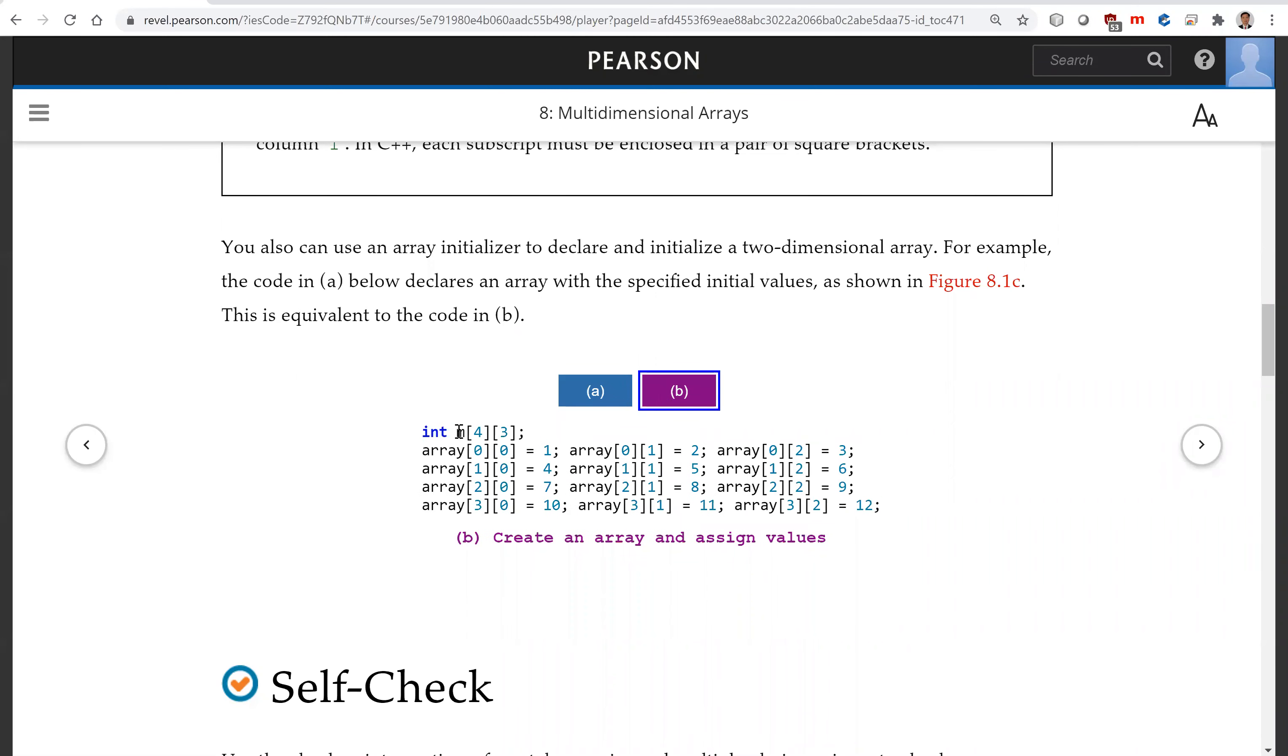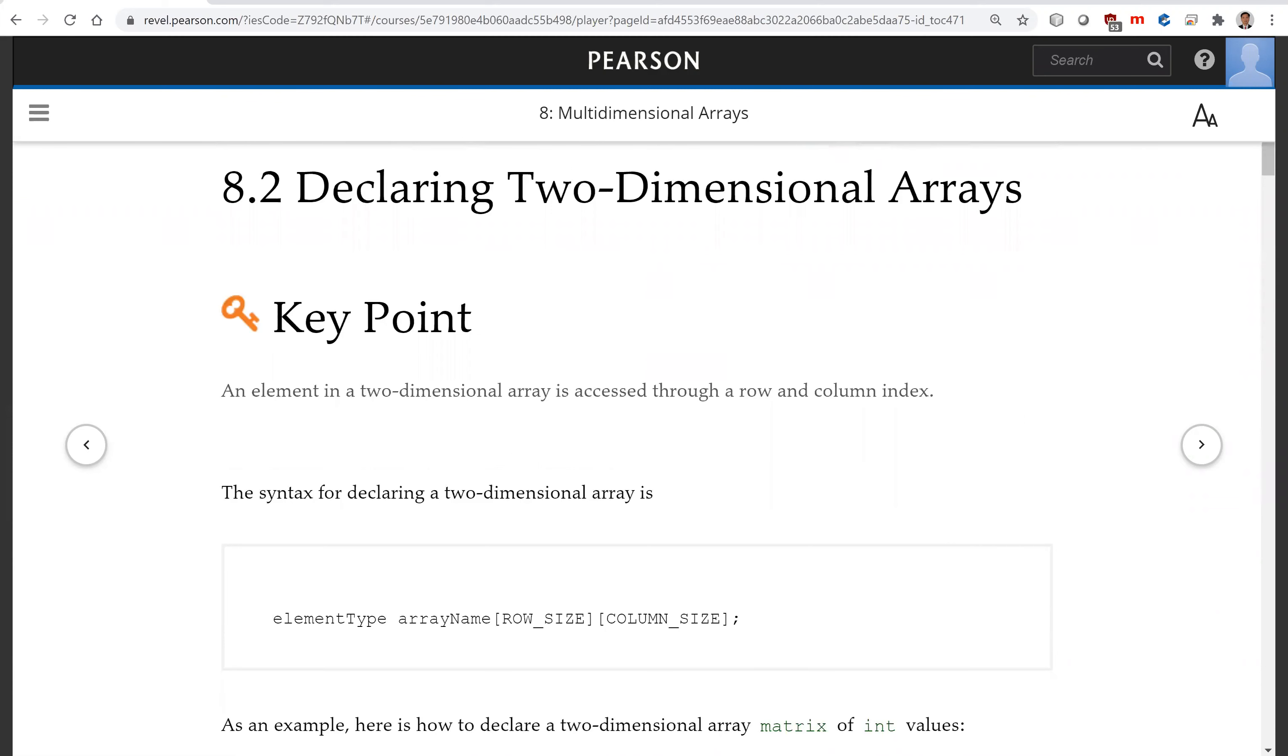You declare the array, then assign elements individually. That is all on this section on declaring two-dimensional arrays. See you in the next video.